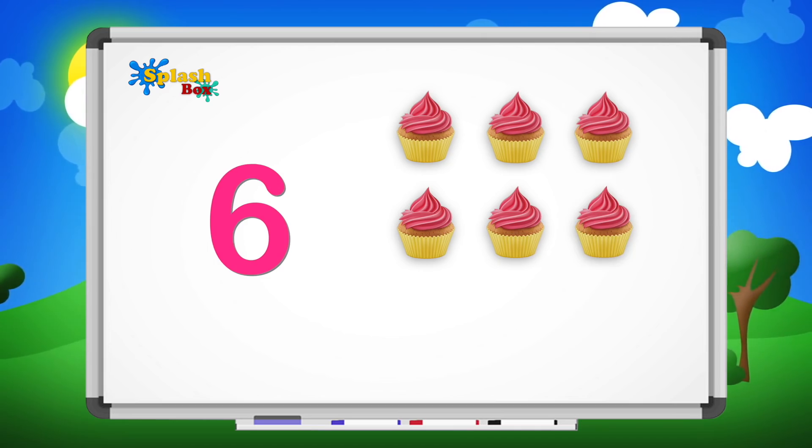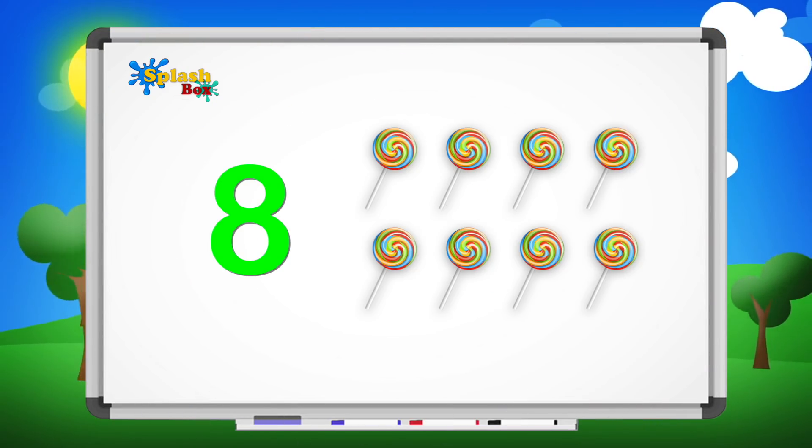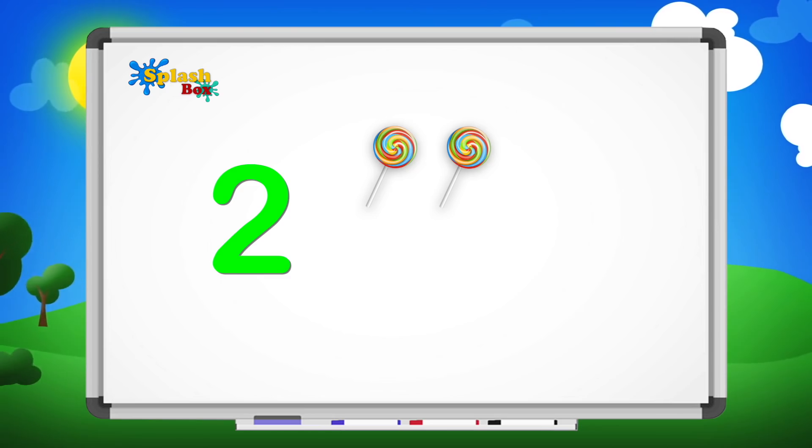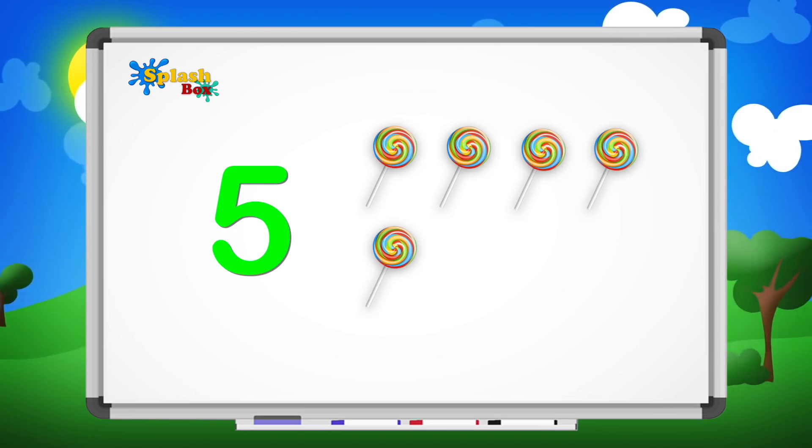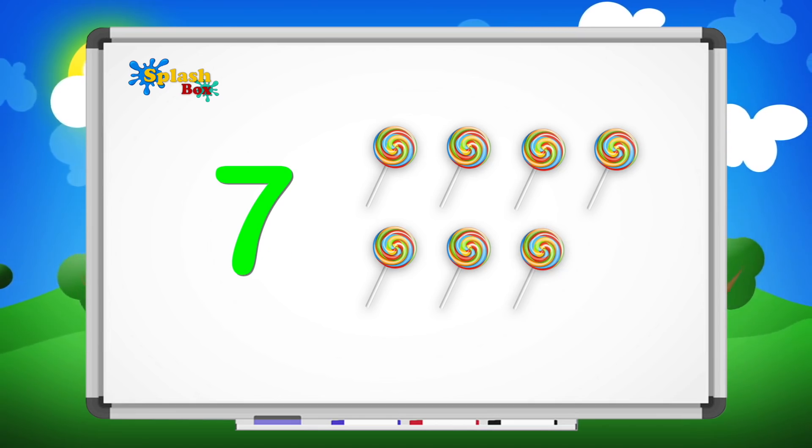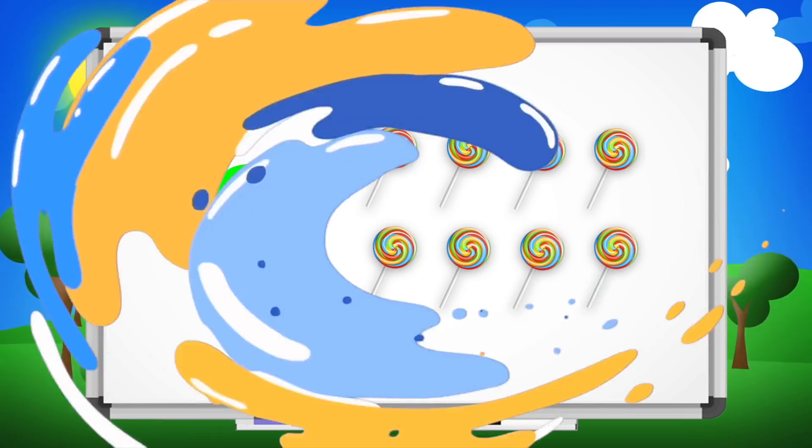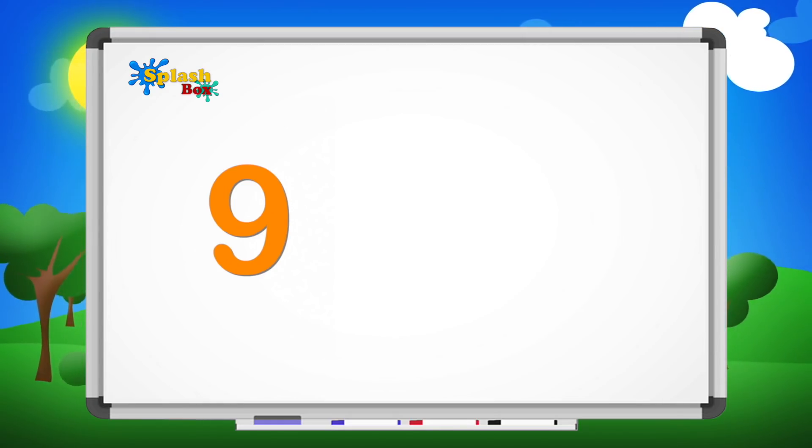Eight, eight lollipops, one, two, three, four, five, six, seven, eight, great! Nine, nine ice creams, one, two, three, four, five, six, seven, eight, nine, outstanding!